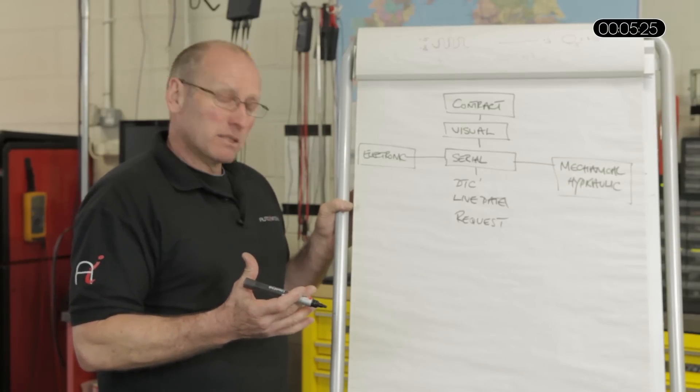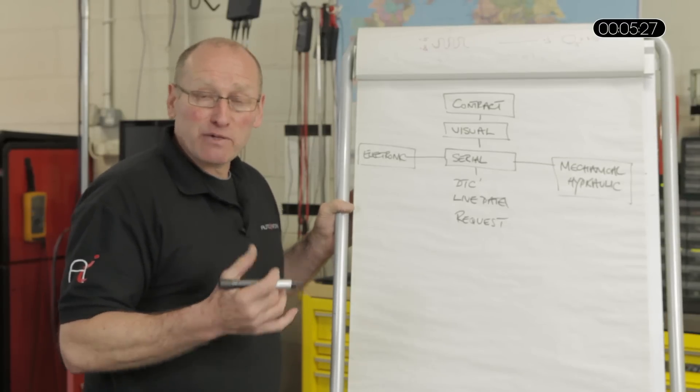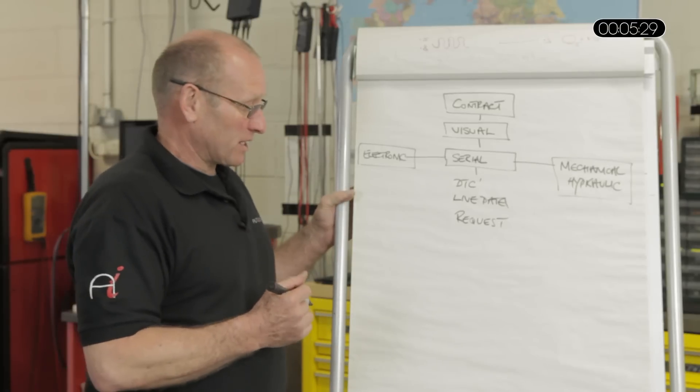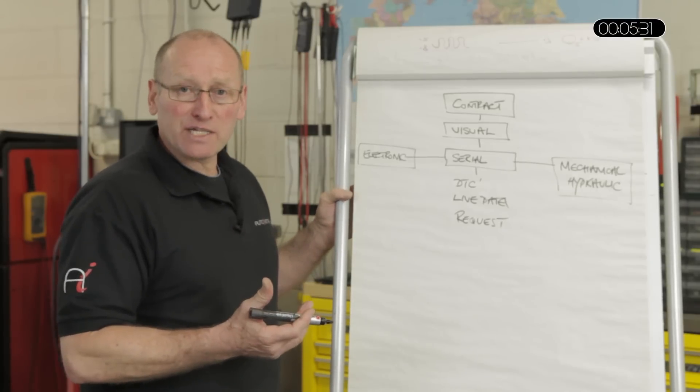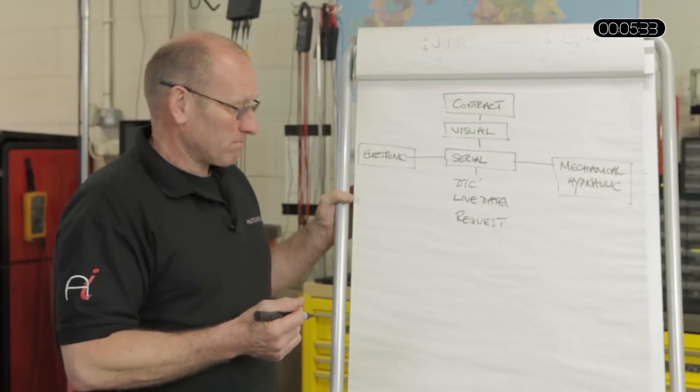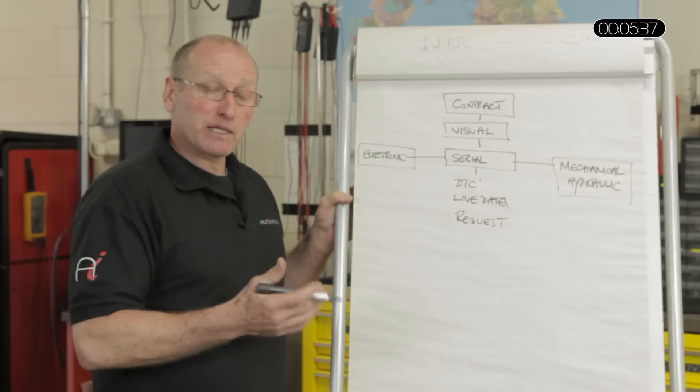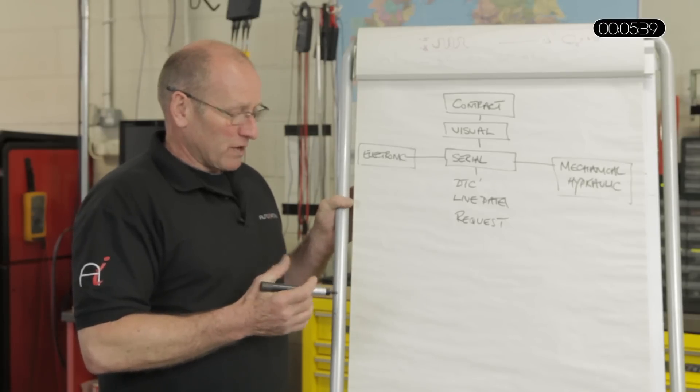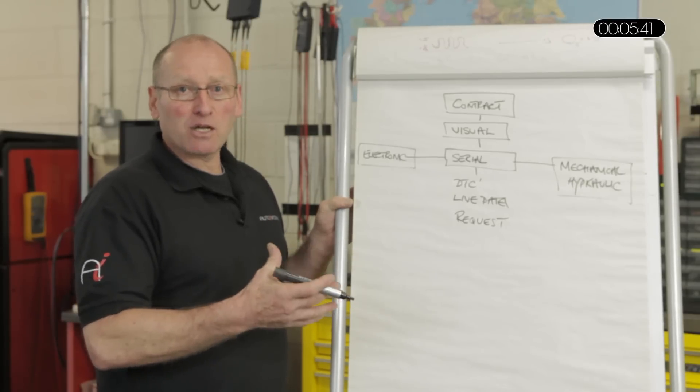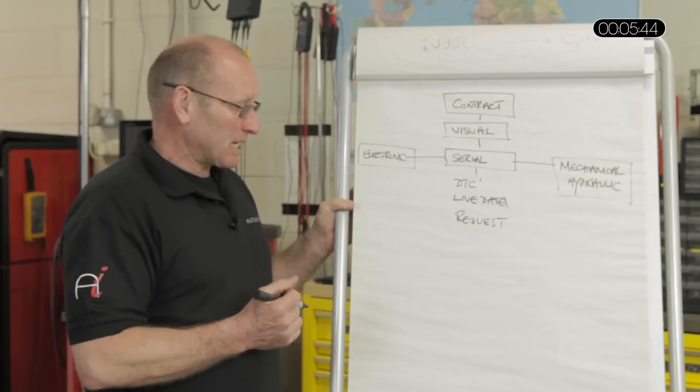The request from an APP sensor, accelerator pedal position or throttle potentiometer, is a load input request to control the fueling of the engine. A request for ABS brake operation, maybe a brake pedal switch.